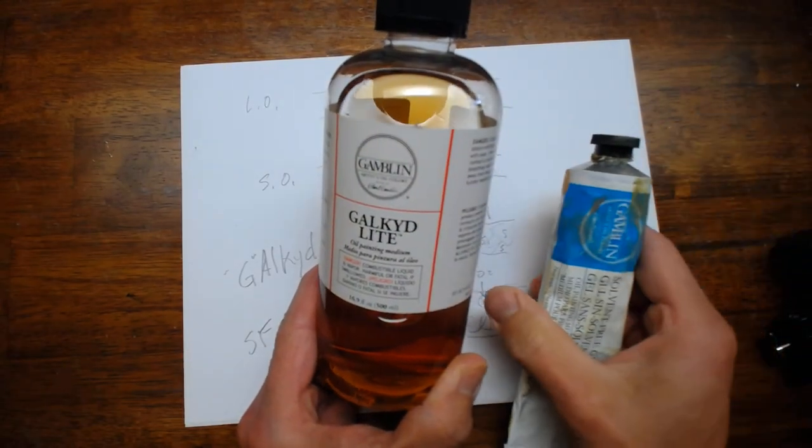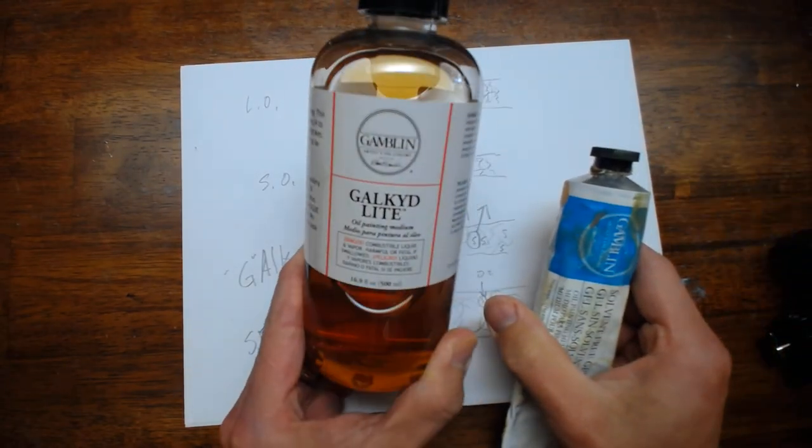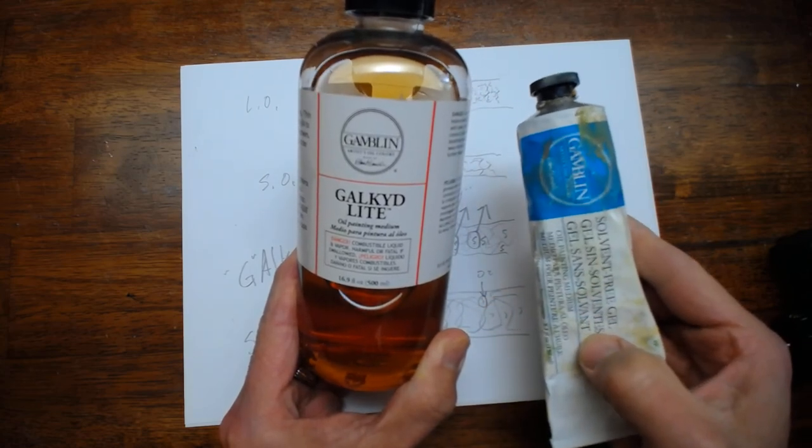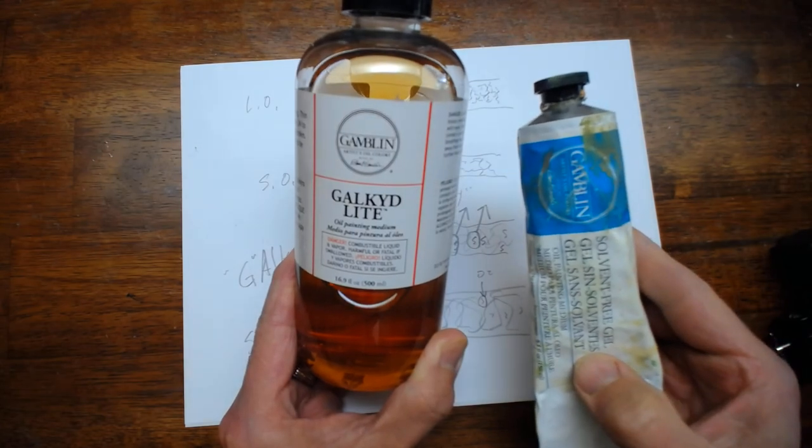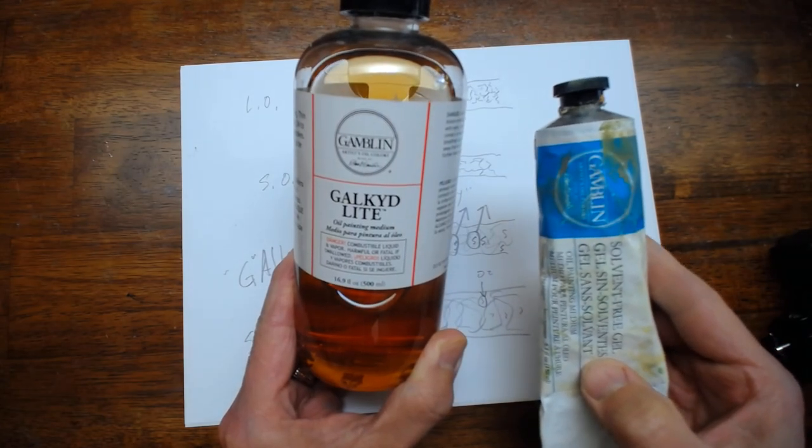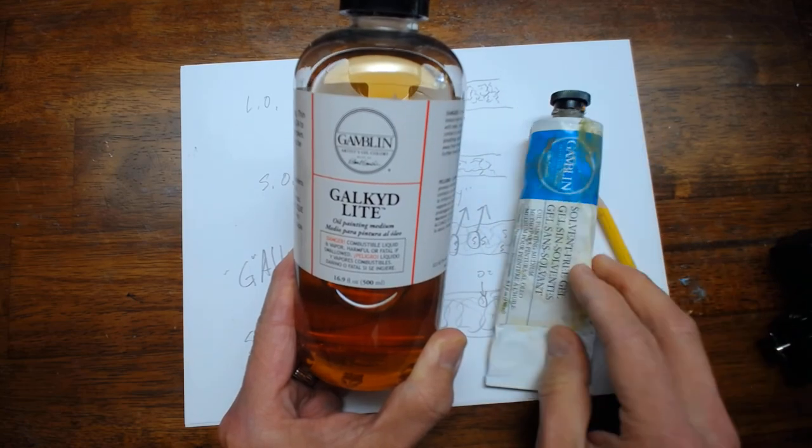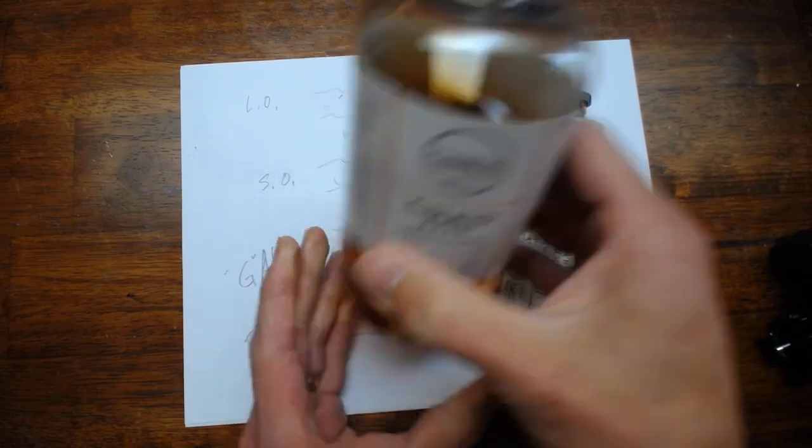A medium like galkid light will increase the flow off of the brush very quickly. A medium like solvent-free gel is a denser consistency and will extend the paint but not turn it into a fluid like a fluid medium will.